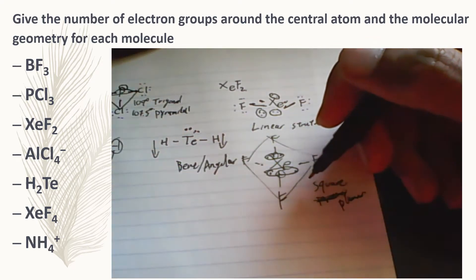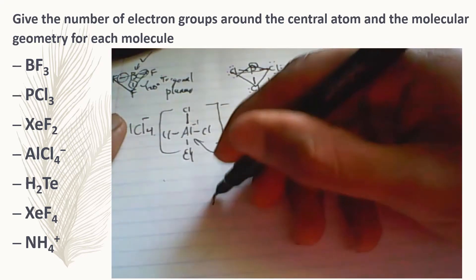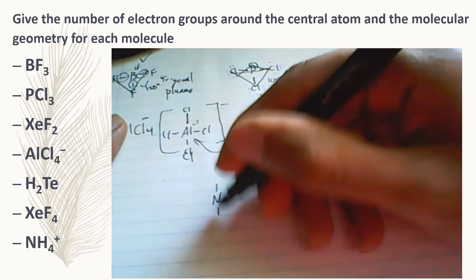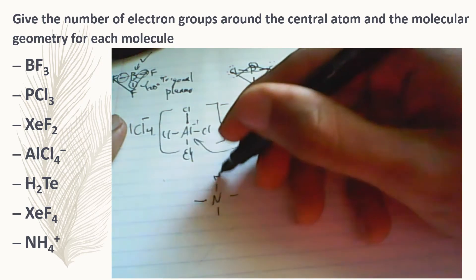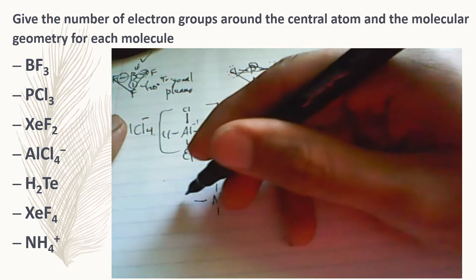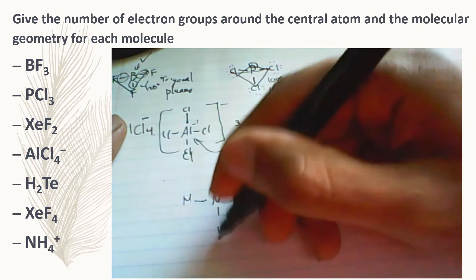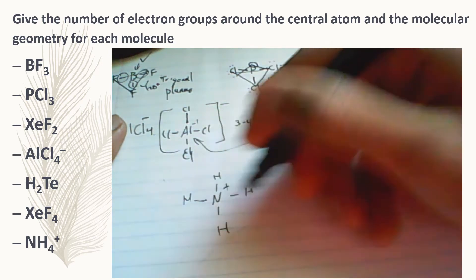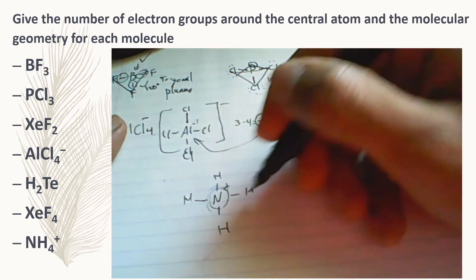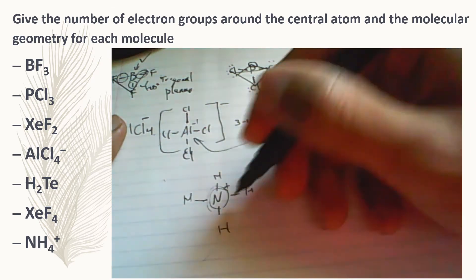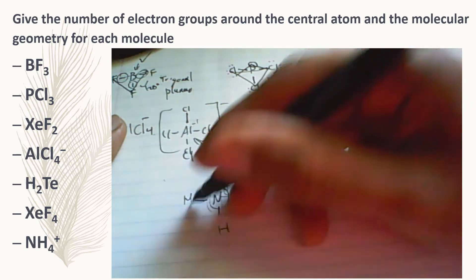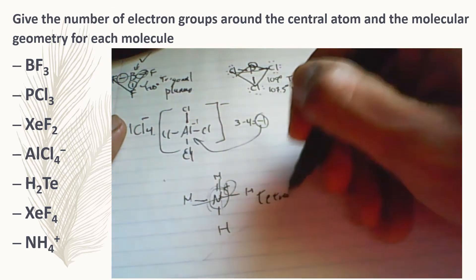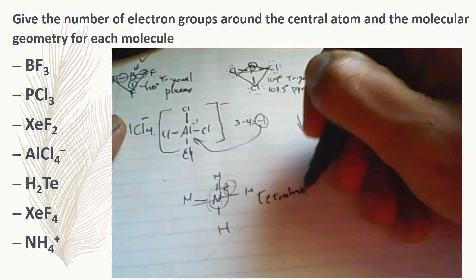Last but not least, we have NH4⁺. We've already seen this one many times in lectures. Nitrogen is going to be a charged molecule — if you calculate the formal charge, it's going to be positive — and the orientation is going to be tetrahedral.